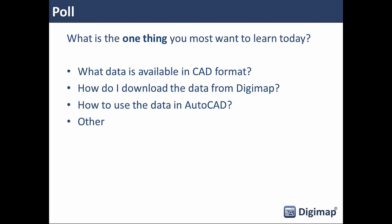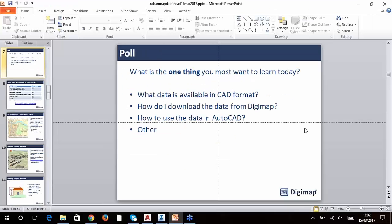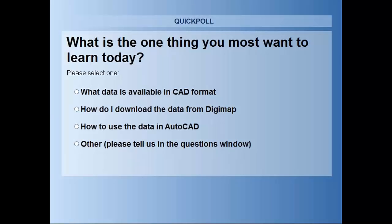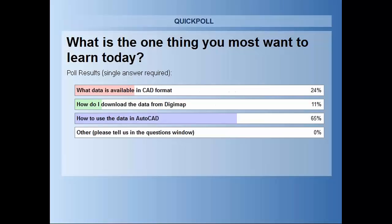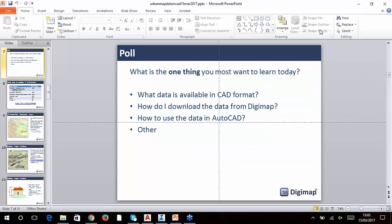First we're going to run a quick poll to find out which of those topics is of most interest. You should see the poll on your screen — tick the topic you're most interested in today. So most people are interested in how to use the data in AutoCAD, and the second choice is what data is available. Thanks very much for completing that.